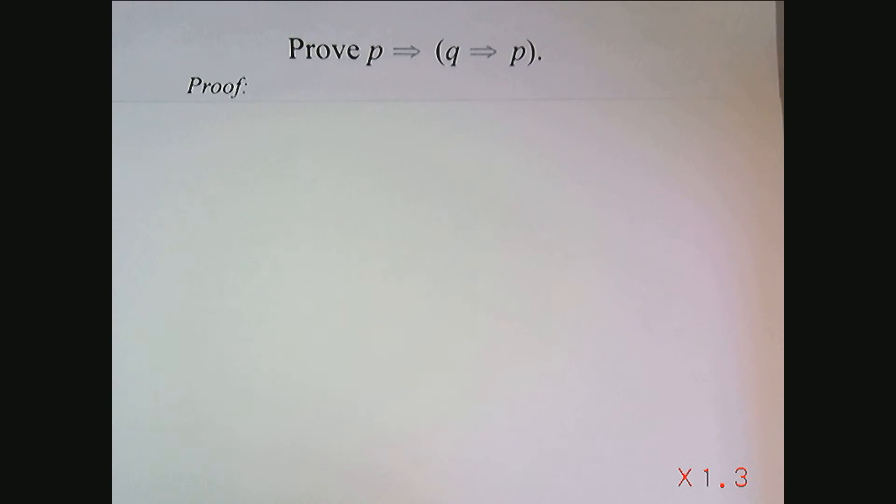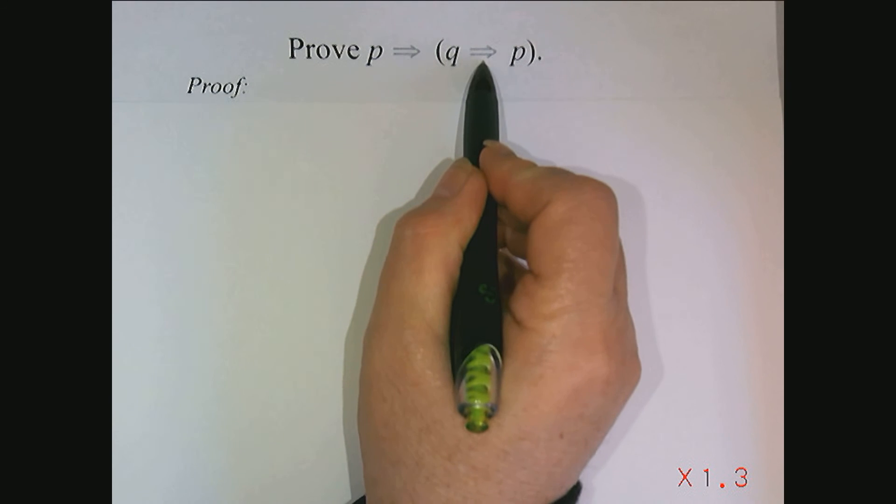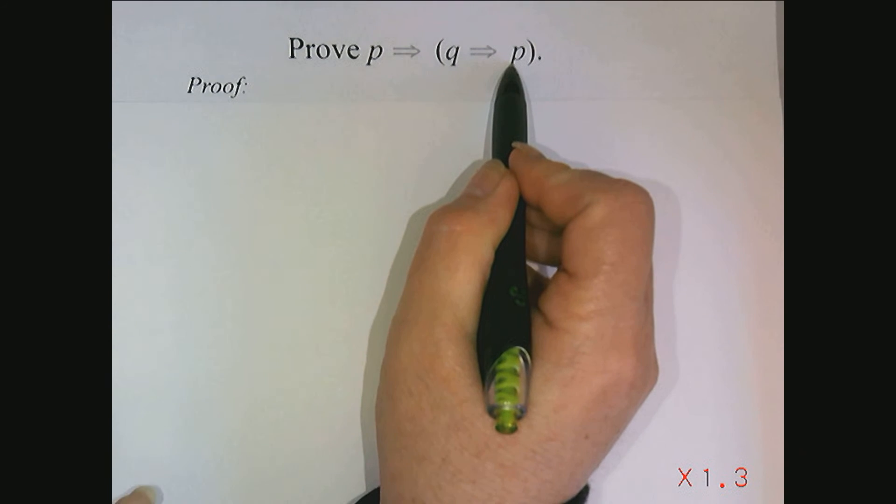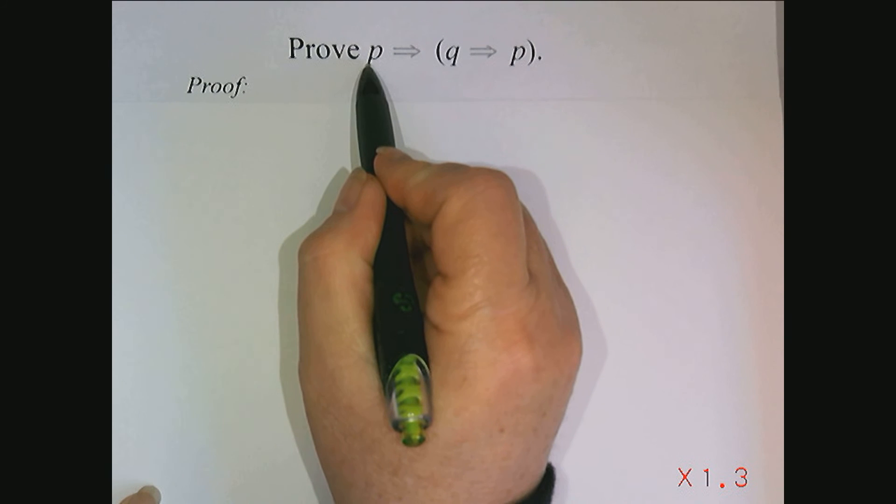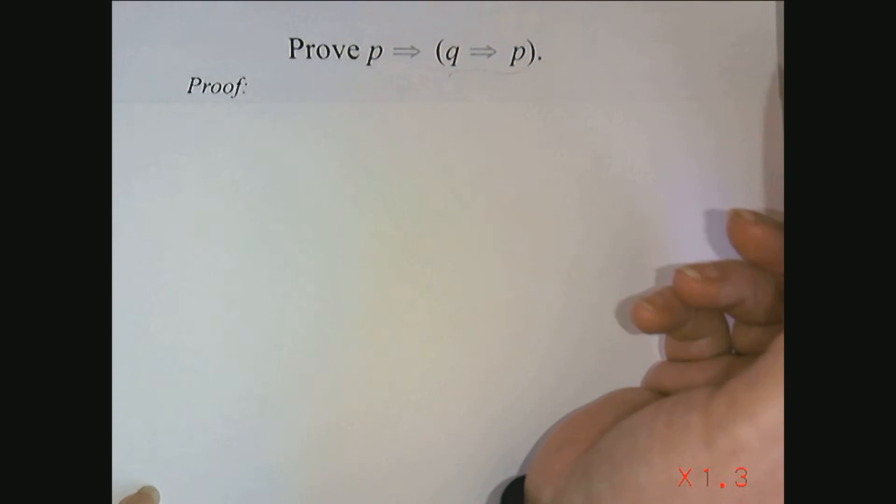In this video, I'd like to show you another example of an equivalent style proof. This time, I want to prove that P implies Q implies P. How am I going to use an equivalent style proof here when there is no equivalence?